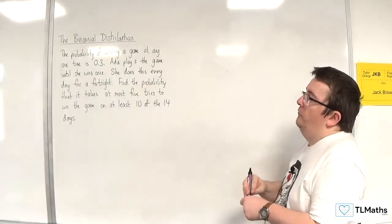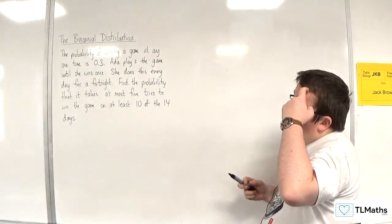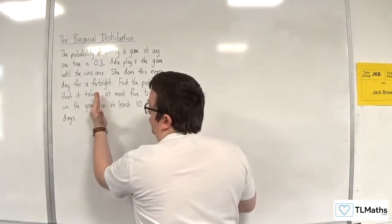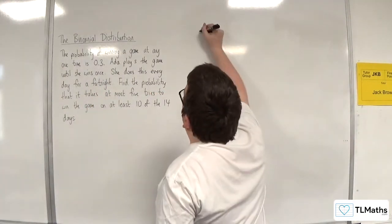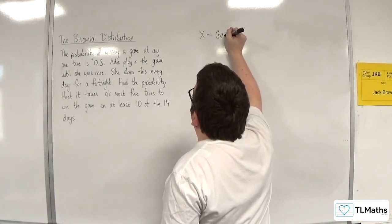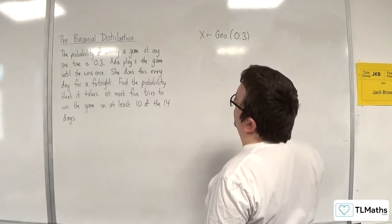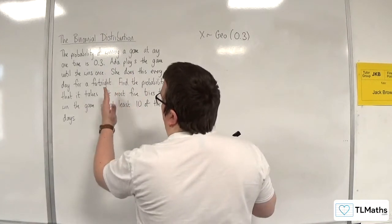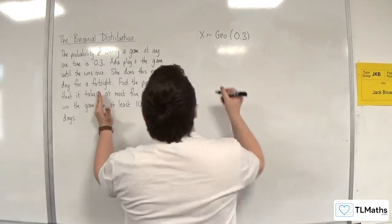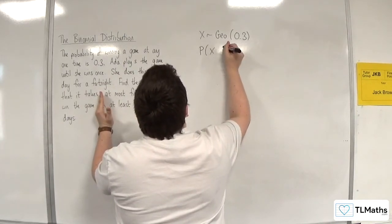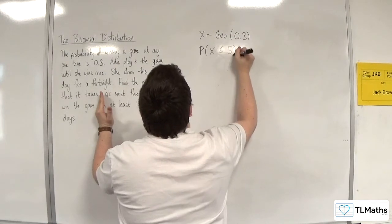So find the probability that it takes at most five tries to win the game. Just think about that stage there. We're going to start off with it being a geometric distribution with a probability of success of 0.3. At most five, so x is less than or equal to five.